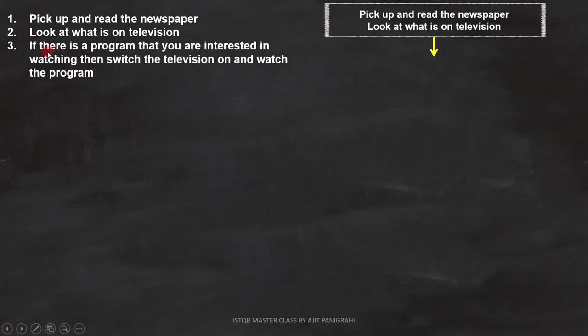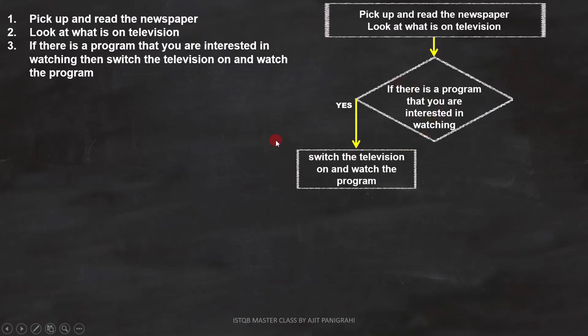Line 3 is, if there is a program that you are interested in watching, then switch the television on and watch the program. Here we have a condition and a statement. The condition is, if there is a program that you are interested in watching, and the statement is switch the television on and watch the program. We can represent the condition and statement like this.